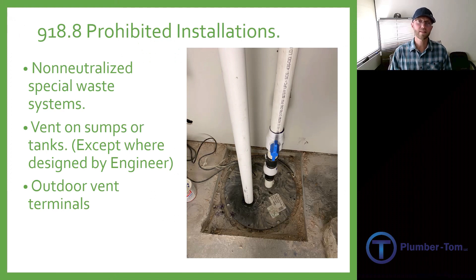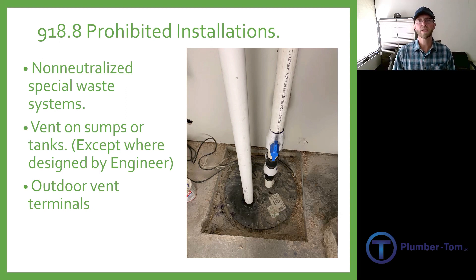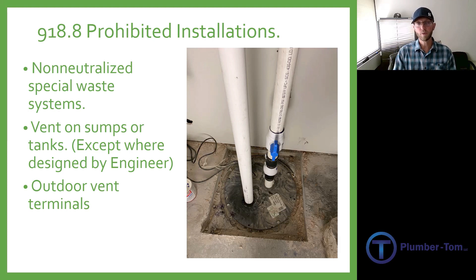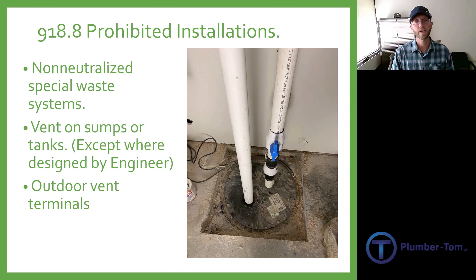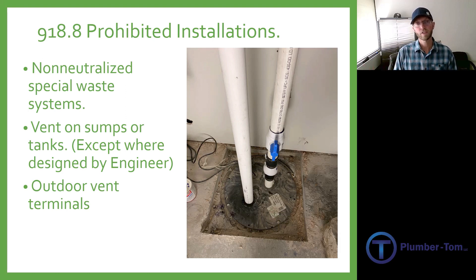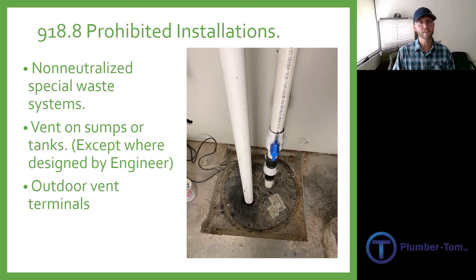918.8 talks about prohibited installations. There are some situations where these should not be installed, including non-neutralized special waste systems — systems containing things that would be corrosive to the air admittance valve and cause it to fail. These are also not allowed for vents on sumps. A sewage ejector sump pumps out fluids at a very fast rate and needs air to replace that volume; air admittance valves are not rated for that volume of air. Unless one is specifically engineered for that purpose, you should not use air admittance valves for the vent on a sewage ejector or sump. Also, air admittance valves should not be used outside near an air intake to prevent sewer gases from entering the building — these are not made for outdoor installations in those scenarios.